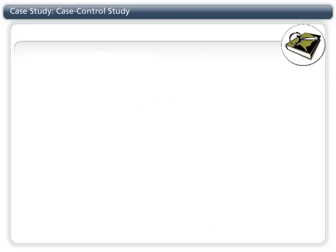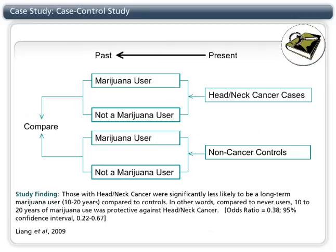Here is an example of a case-control design used to study the association between past marijuana use and head-neck cancer. The researchers recruited participants who had head-neck cancer and those who did not. They administered a questionnaire to measure marijuana use over a long period in history. Using this data, they determined the odds of being a long-term marijuana user among their cases and controls and estimated the association between long-term use and cancer using an odds ratio.